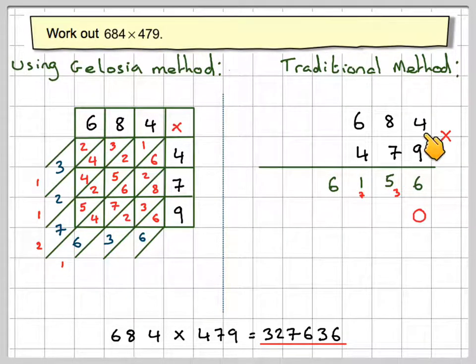and you now do 7 times 4, which is 28. 7 times 8, which is 56 plus the 2, which makes 58. 6 times 7, so it's 42 plus the 5, which now makes 47. You now put in 2 zeros,